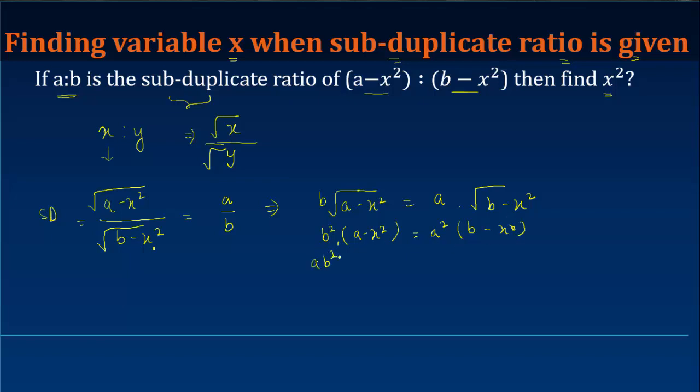Or ab² minus x²b² is equal to a²b minus a²x². Let's get all the terms relating to x on one side, and we will get a²x² minus x²b² is equal to a²b minus ab².